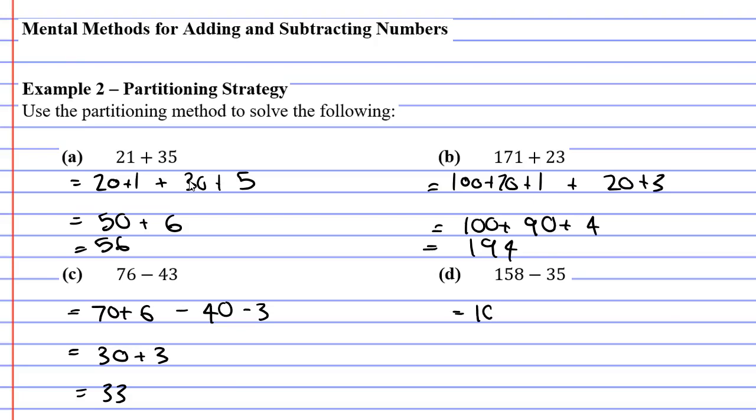Question D. We've got 158. So 100 plus 50 plus 8. And then we're going to subtract the 30 and subtract the 5 from the 35. So this is going to be 100 plus. Now 50 minus 30 is 20. So 100 plus 20. And 8 minus 5 is 3. So plus 3. Giving us 123. And that concludes our video on the partitioning strategy.